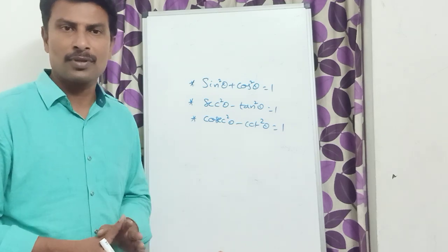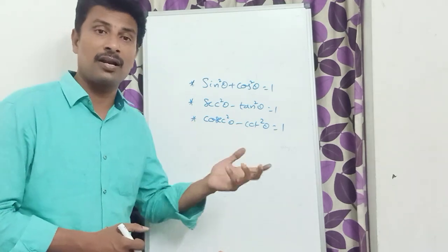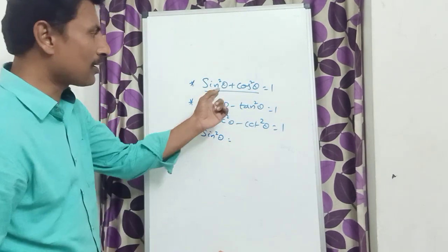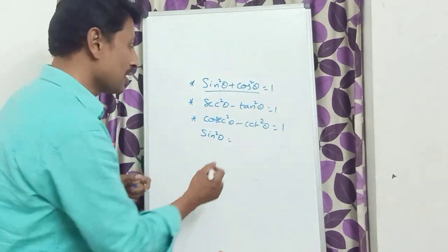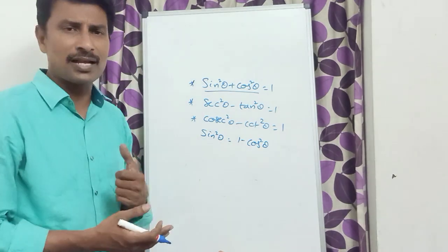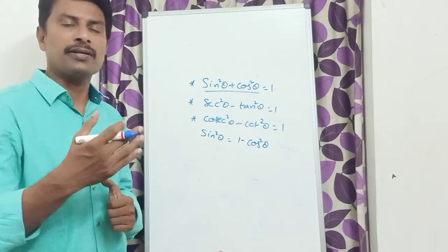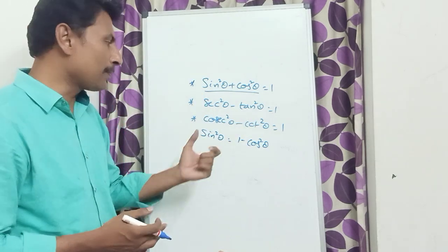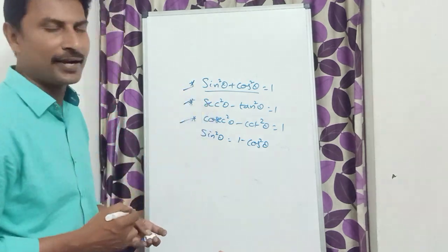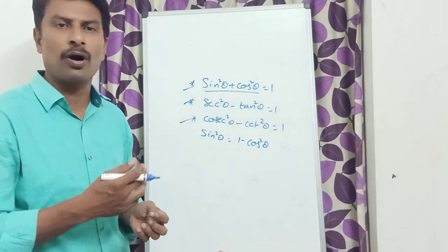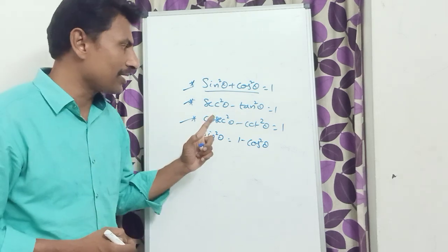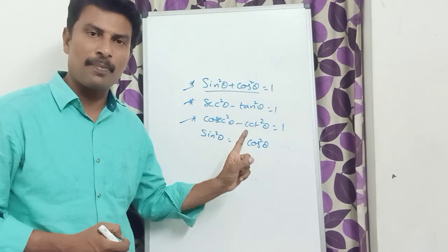By using these identities, we can prepare other relations. For example, using the first one — by transposing cos²θ from LHS to RHS — it becomes sin²θ = 1 − cos²θ. You may already know that answer. Otherwise, whenever you want to use the identity, you can prepare the relations by transposing. First try to memorize these three identities: sin²θ + cos²θ = 1, sec²θ − tan²θ = 1, cosec²θ − cot²θ = 1.